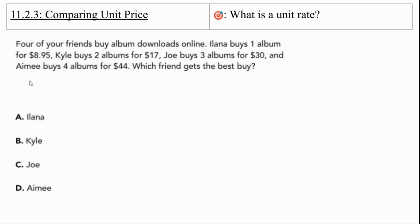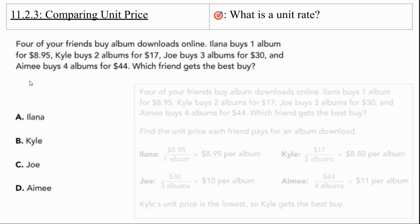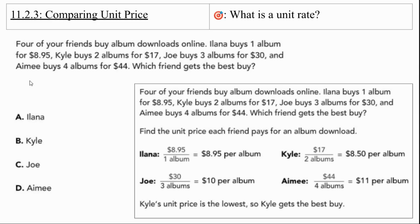We're going to try one more comparing. Four of your friends buy album downloads online. Lana buys one album for $8.95. Kyle buys two albums for $17. Joe buys three albums for $30. And Amy buys four albums for $44. Which friend gets the best buy? We're going to figure that out by taking the price divided by the number of albums.